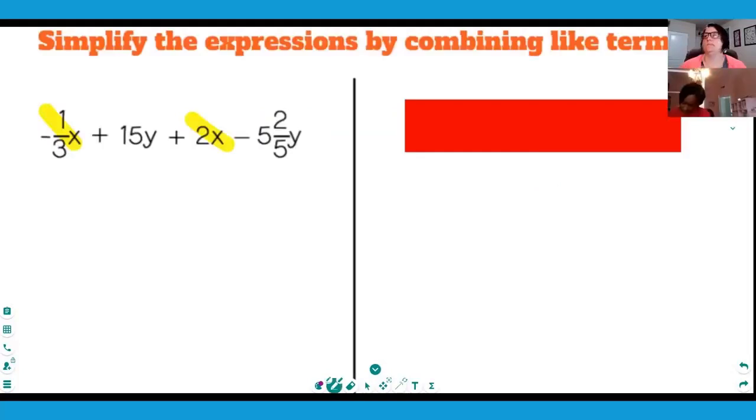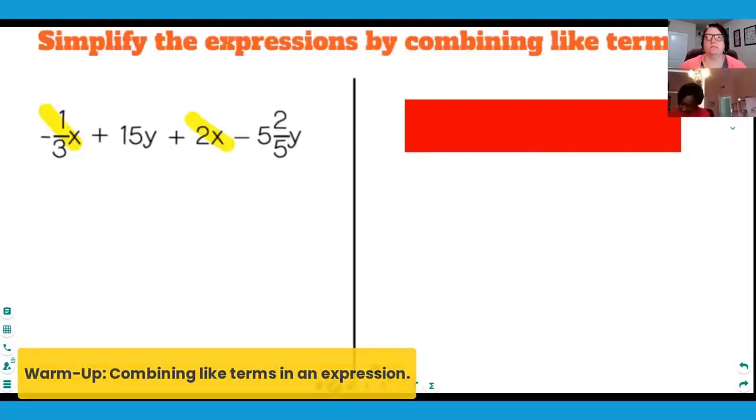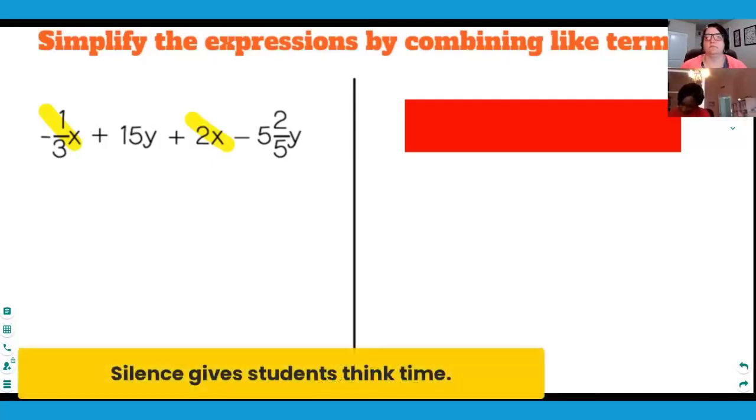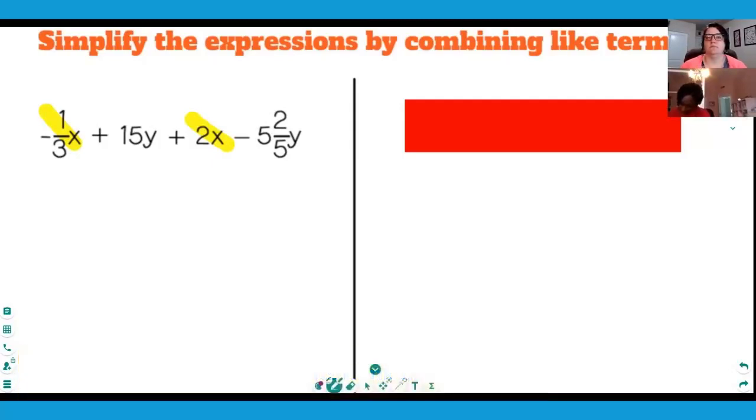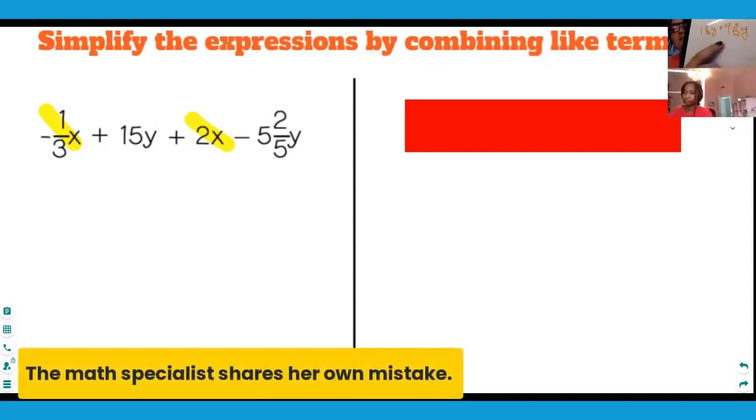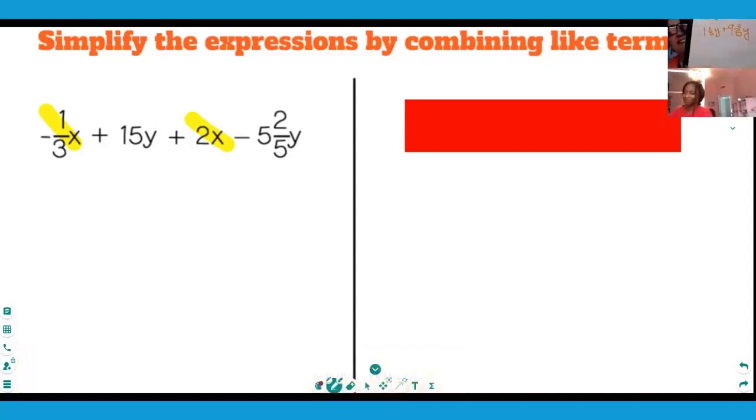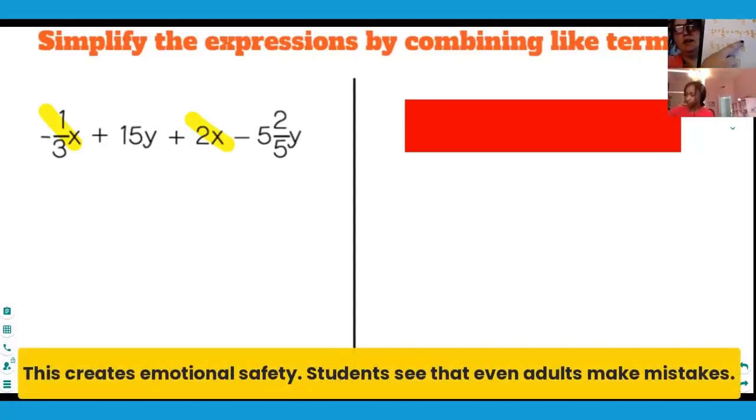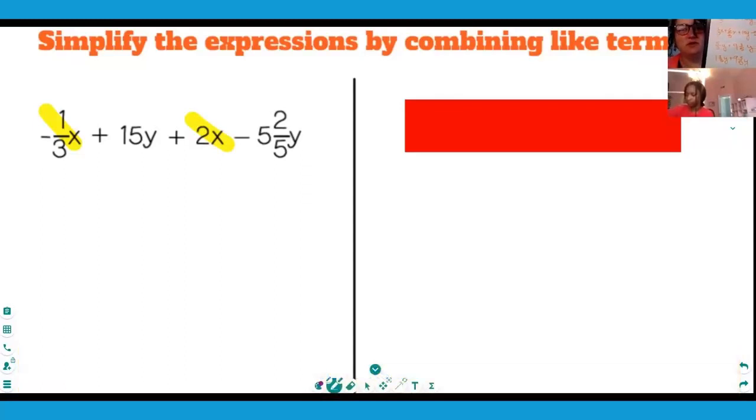Excellent. I got one and two-thirds x plus nine and three-fifths y. Very good, that's exactly what I got, except I accidentally wrote y twice—that's supposed to be an x. Excellent job. So you're pretty good with adding and subtracting mixed numbers that don't have common denominators. You comfortable with that?